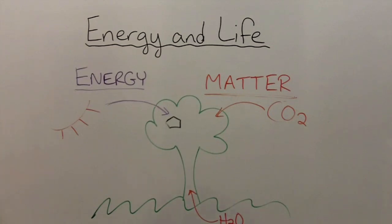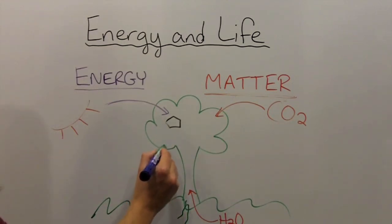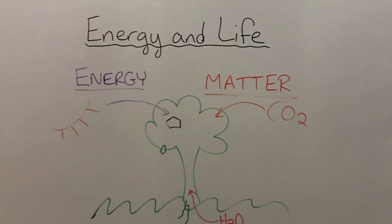Once plants have made glucose through photosynthesis, the plants can do two things with it. They can use the molecules of glucose to build other molecules, or in other words, structure. For example, the plant can build new cells, longer roots, more leaves. In other words, the plant can grow.